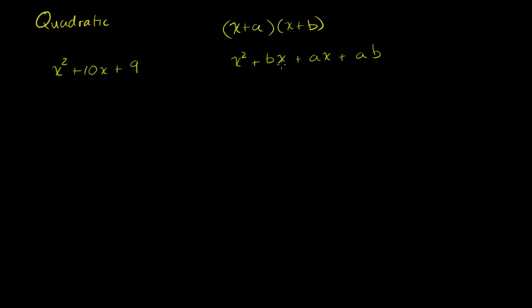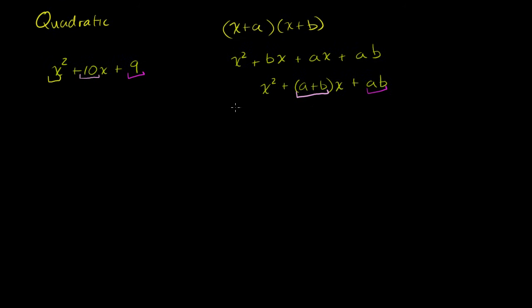If we want to add the two middle terms, because they're both coefficients of x, we can write this as x squared plus (a plus b)x plus ab. So in general, if we assume this is the product of two binomials, the middle coefficient on the x term — the first degree coefficient — is going to be the sum of a and b, and the constant term is going to be the product of a and b.